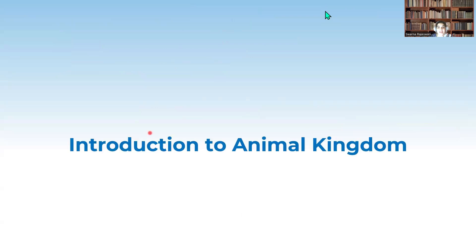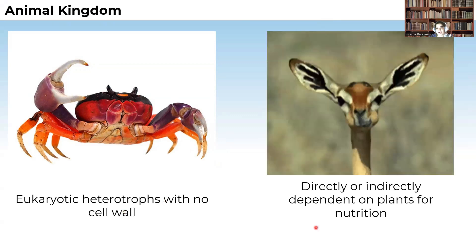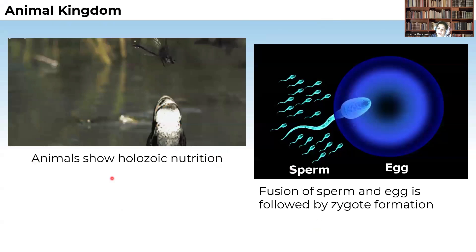Now coming to the introduction to the animal kingdom. Animals are eukaryotic heterotrophs and they do not contain any cell wall. They depend directly or indirectly on plants for their nutrition, and they are holozoic in nature — meaning they show holozoic nutrition, taking in food by the process of ingestion through the mouth.